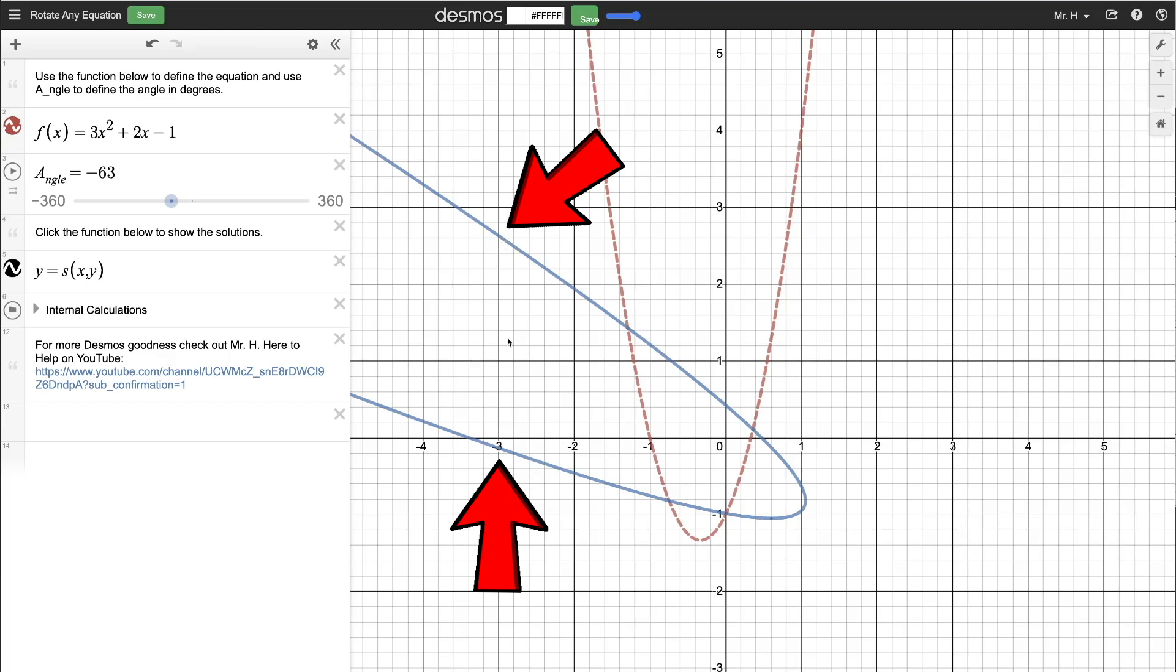This would not be a function. So something's going on here in the background in these internal calculations that makes this so that I can still graph this, even though it's not a function.